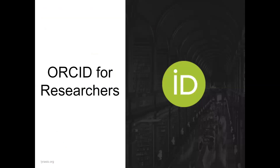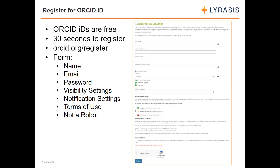Now a brief overview of how ORCID works for researchers — this matters because we need researchers to have information in their ORCID records in order for you as funders to get that information from ORCID. Researchers do need their own ORCID IDs with information populated in their records for everyone to benefit. Anyone can register for their own ORCID ID for free at orcid.org/register — the process takes about 30 seconds. It's a basic registration form requiring just a name, email address, and a password. Getting that ORCID number is just the first step.